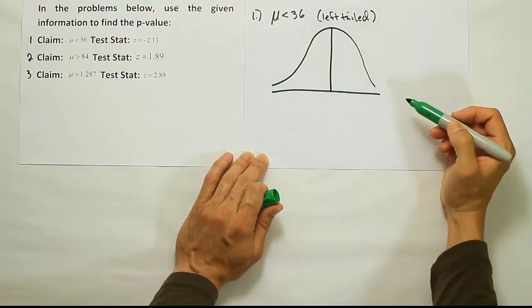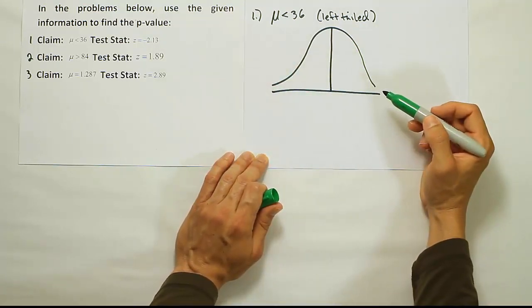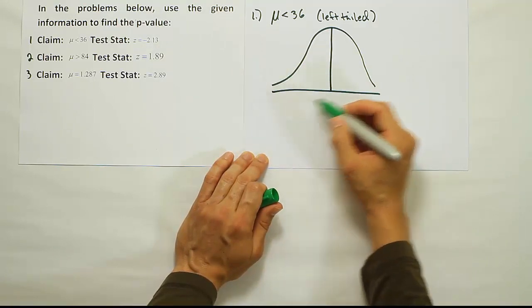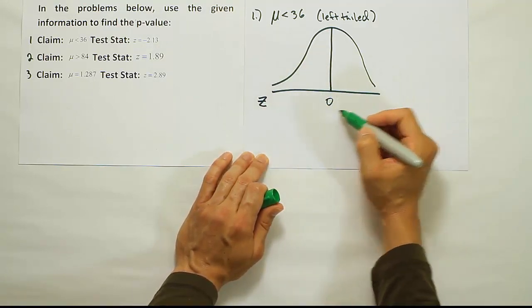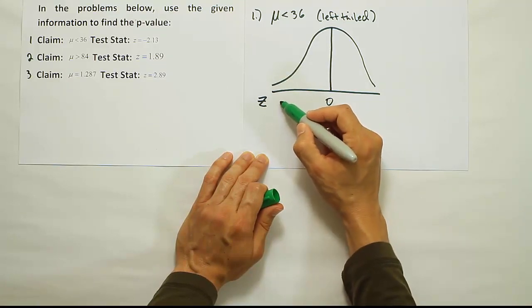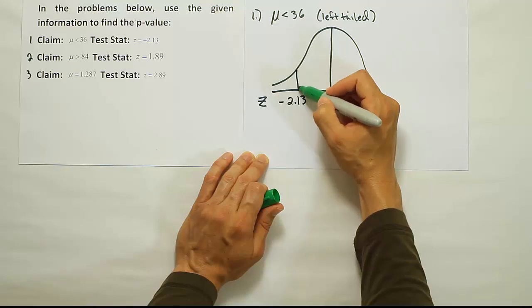On that bell curve, I'm going to label my test stat. Your test stat is negative 2.13, so we're going to put the test stat on the curve where it belongs. Negative 2.13 is going to be over here on the left-hand side.